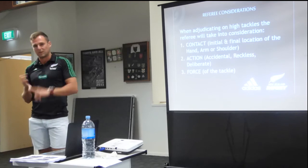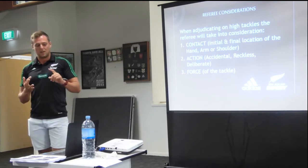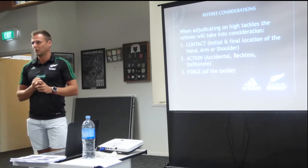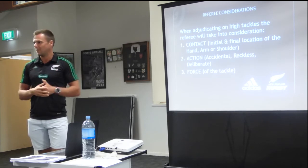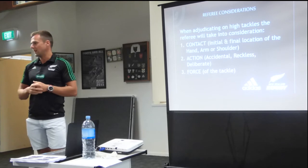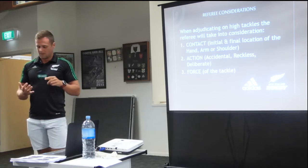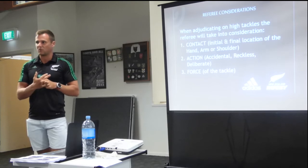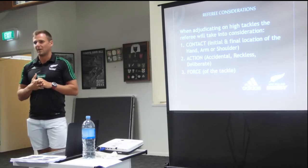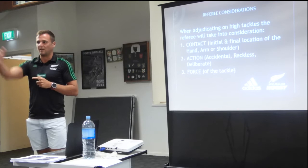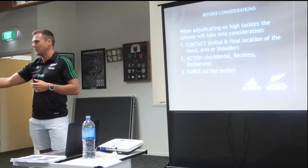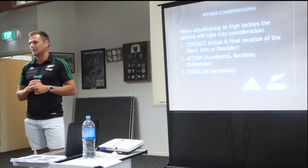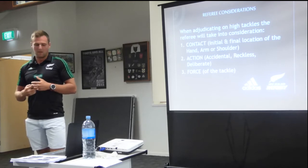That can happen in sequence. We've seen the contact — it's high, the action was reckless, and there's a significant amount of force. Those three things add up: we're looking at red card. Alternatively, the contact starts high, the action was reckless, but not that much force was involved — maybe an arm swung out as a player was getting beaten. We're looking at a yellow card. Does that make sense to everybody?